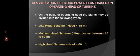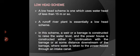Classification of hydropower plants based on operating head of turbine: Low head scheme — head of water less than 50 meters. Medium head scheme — head varies from 50 to 60 meters. High head scheme — head greater than 60 meters. A run-of-river plant falls under the category of low head scheme.